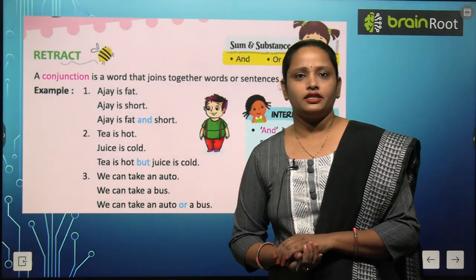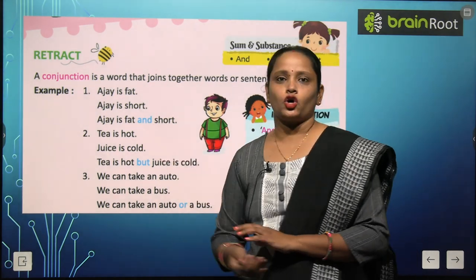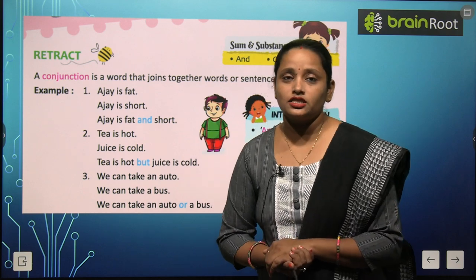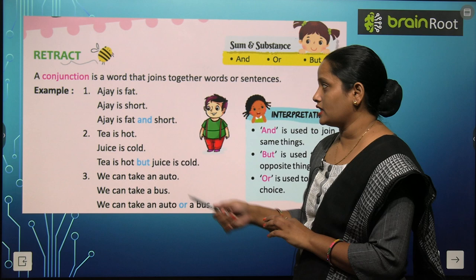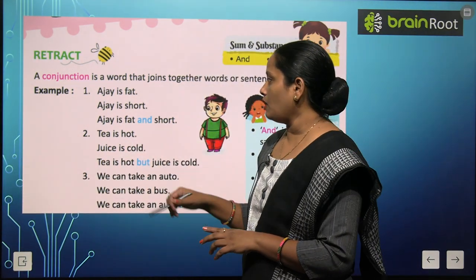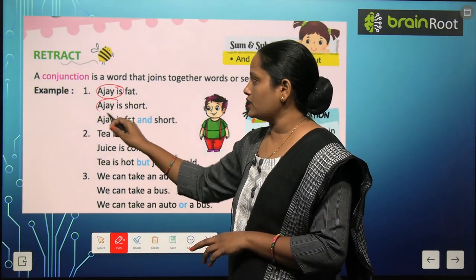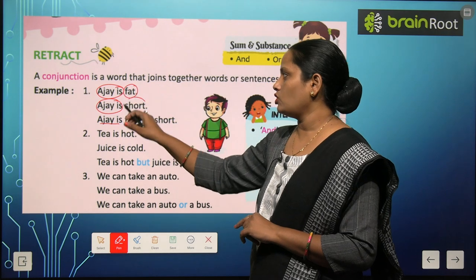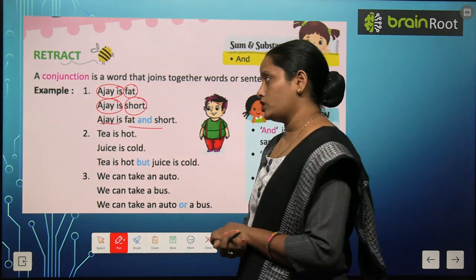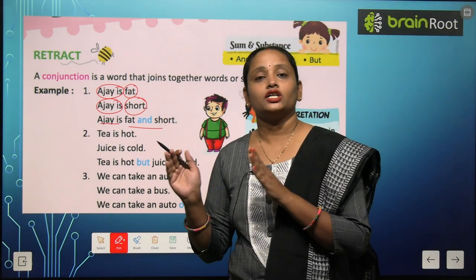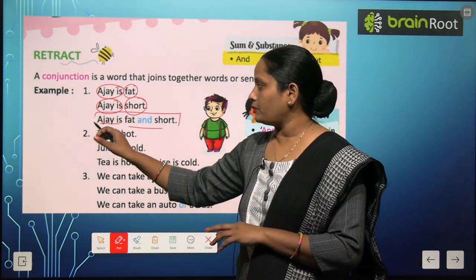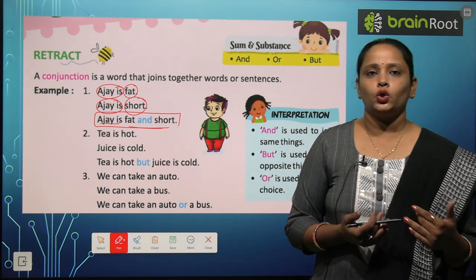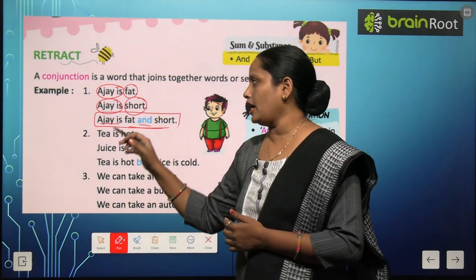Example: 'Ajay is fat.' Ajay बहुत fat यानी मोटा है। 'Ajay is short.' Ajay की height बहुत कम है। तो Ajay मोटा भी है और छोटा भी है। अब हमने इन दोनों sentences को join किया। क्योंकि दोनों में 'Ajay is' same था, हमने उसे एक बार लिखा और fat और short के बीच में 'and' add कर दिया। Sentence बन गया: 'Ajay is fat and short.'